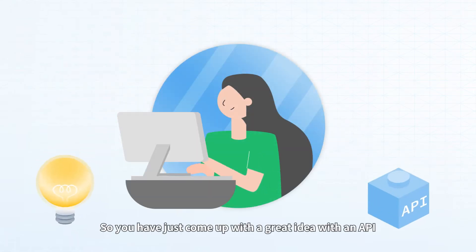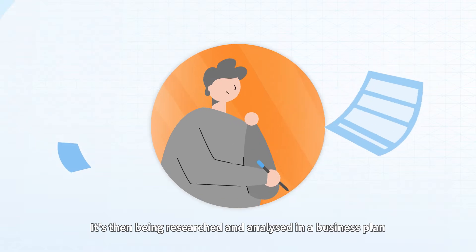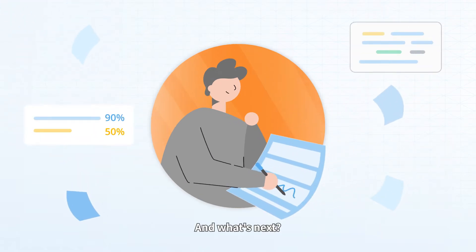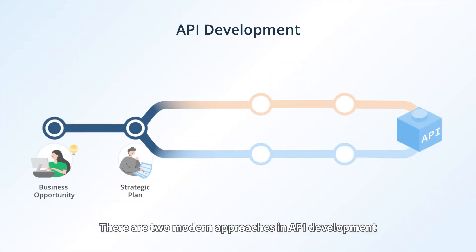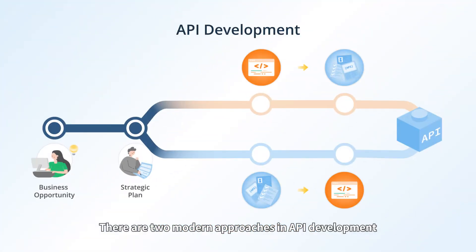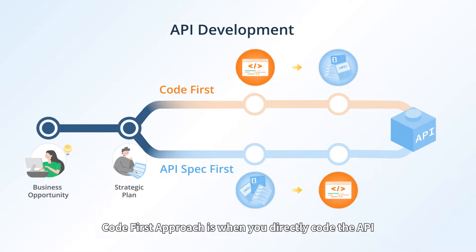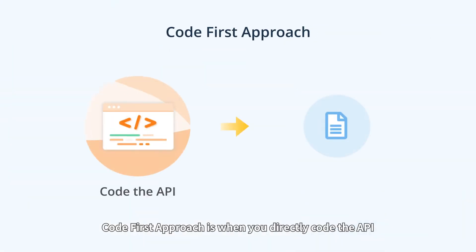So you have just come up with a great idea for an API, it's then being researched and analyzed in a business plan — and what's next? How are you going to develop the API as a product? There are two modern approaches in API development: code first and API spec first.